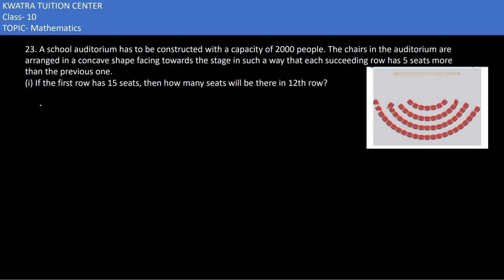In problem 23, a school auditorium has to be constructed with a capacity of 2,000 people. The chairs are arranged in a concave shape facing the stage such that each succeeding row has five seats more than the previous one — first row 15, second row 20, then 25, and so on. We have to find the 12th row, meaning we need to find a12. We can see a plus 11d, where a equals 15.